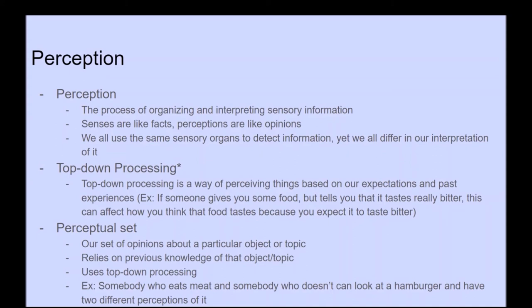Now we get into perception, which is the process of organizing and interpreting sensory information. Senses are like facts and perceptions are like opinions — we all use the same sensory organs but differ in our interpretation. Perception works through top-down processing, perceiving things based on our expectations and past experiences. For example, if somebody tells you food tastes bitter before you try it, this can affect how you think it tastes. The perceptual set is our set of opinions about a particular object or topic, relying on previous knowledge — for example, a meat-eater and a vegetarian can look at the same hamburger and have two very different perceptions of it.